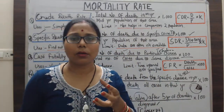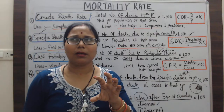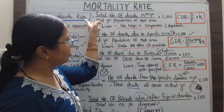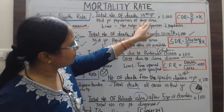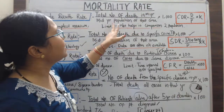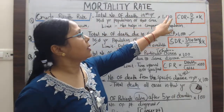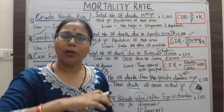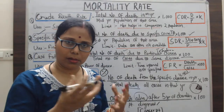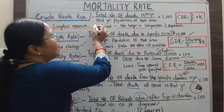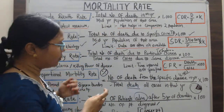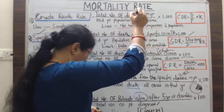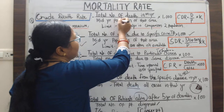The crude death rate — 'crude' means a raw, overall, or general picture. The formula uses the total number of deaths in a year divided by the median population of that year, multiplied by 1000. The median population in the denominator refers to the population on the first of July, which is used because the population is continuously changing.